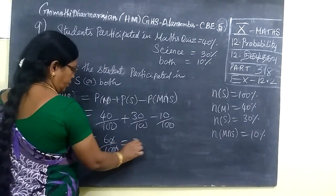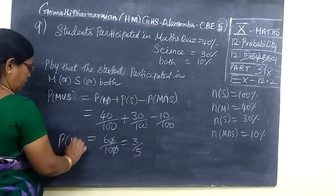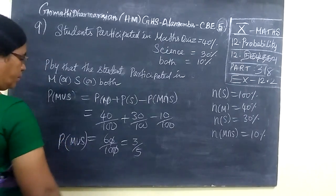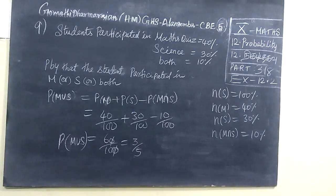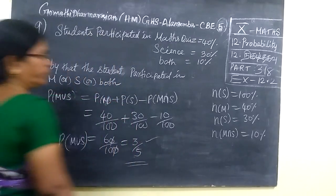So answer is 3 by 5. This P(M union S). This probability is 3/5. So the answer is option 5. Thank you.